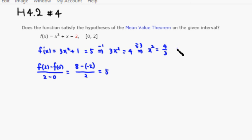Then we take the square root of both sides, so x is equal to plus or minus square root of 4 thirds. But in this case it's between 0 and 2, so this is the positive one.